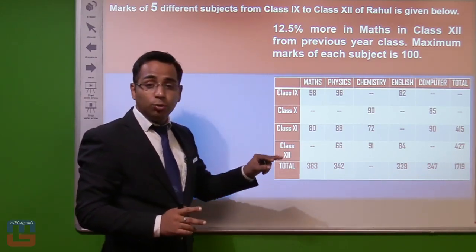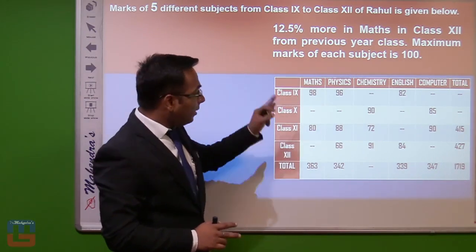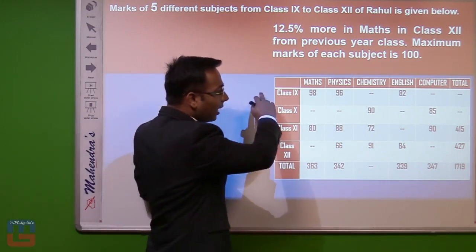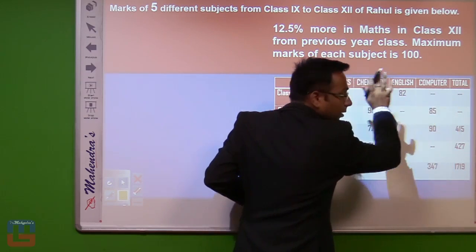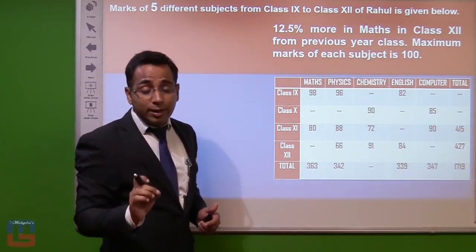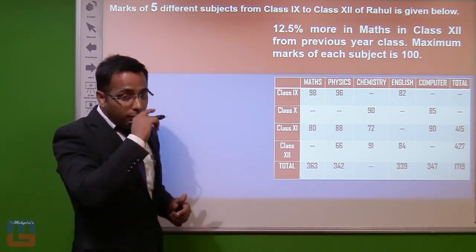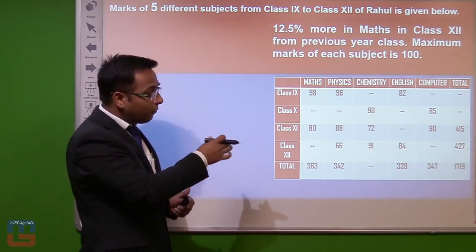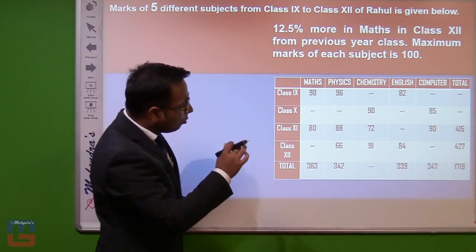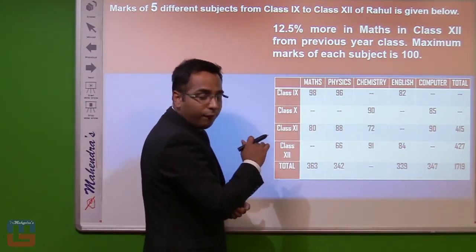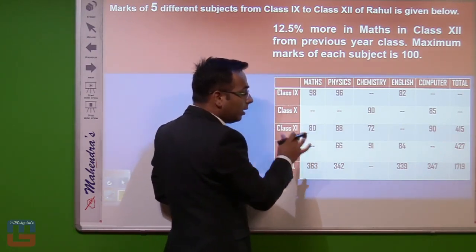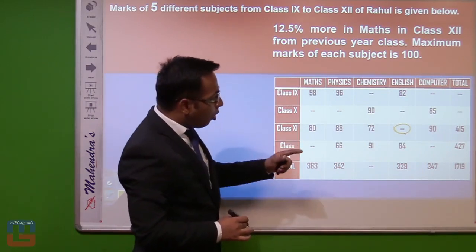The basic approach is to go either row-wise or column-wise. We start column-wise. In class 9, the total is missing along with three subject values, so we can't solve it directly. In class 10, four data points are missing. But in class 11, we have only one data missing — the marks of English.